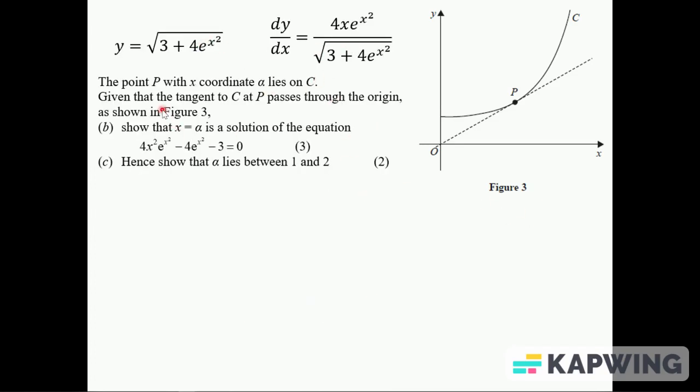Point P has x-coordinate alpha, and the tangent through P goes to the origin. Show that x equals alpha is a solution to that equation. So I'm using x's rather than alpha's. At P, dy by dx is equal to this, that's the gradient of P. But I can also work the gradient of this line out by doing the y step over the x step. So that y divided by that x gives me the gradient as well. The y is this, and the x is just x.